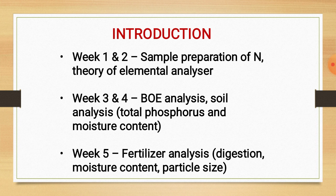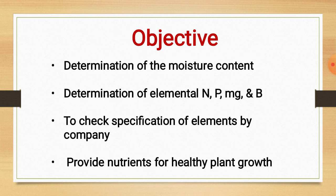In week five, fertilizer analysis covers digestion, moisture content, and particle size. The objectives for fertilizer analysis include: determination of moisture content, determination of elemental nitrogen, phosphorus, magnesium, and boron, and checking the element specifications set by the company.